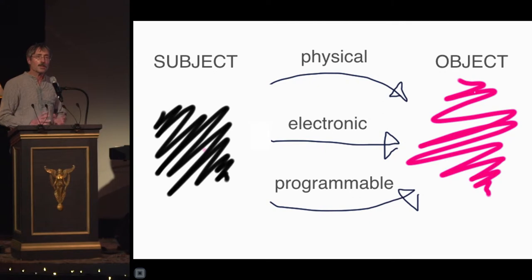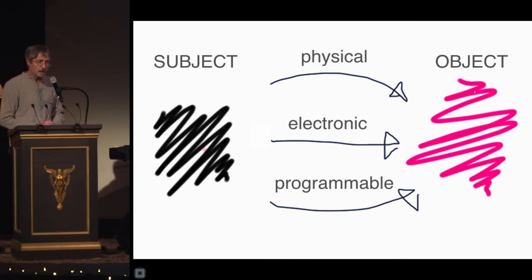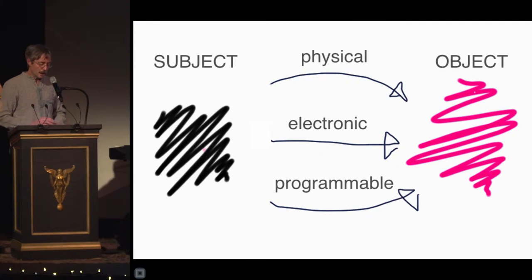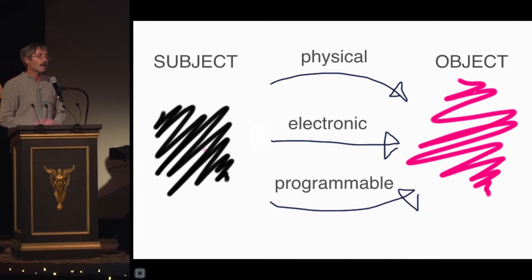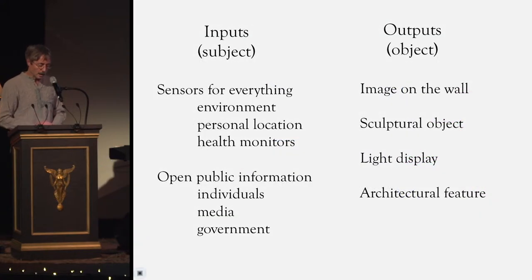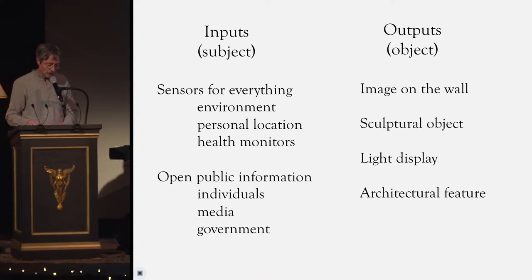In these examples there are different kinds of connections between the subject or the phenomenon that's being sensed and the object or the art object that is representing it. What I find exciting here is that the programmable connection represents a tremendous increase in flexibility — a real opportunity for artists and for people who deal with data that may not need a precise numerical representation.